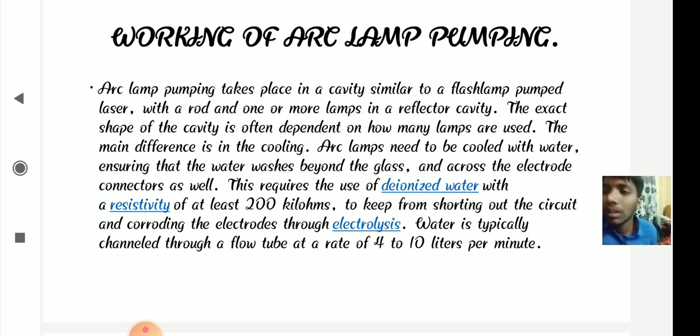Working of arc lamp pumping: Arc lamp pumping takes place in a cavity similar to a flashlamp pumped laser, with a rod and one or more lamps in the reflector cavity. The exact shape of the cavity is often dependent on how many lamps are used. The main difference is in the cooling. Arc lamps need to be cooled with water, ensuring that the water washes beyond the glass and across the electrode connectors as well.